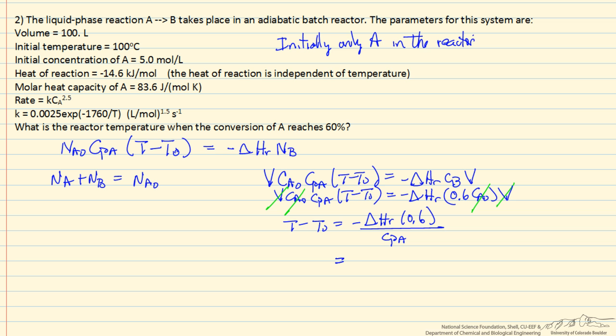And the heat of reaction, we'll put it in joules per mole. It's negative, and I have a negative sign here, so this becomes positive, times 0.6. Heat capacity is 83.6 joules per mole Kelvin. The final temperature then in the reactor is 205 degrees C.